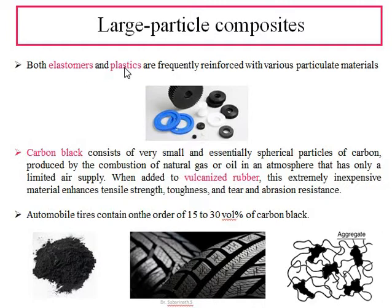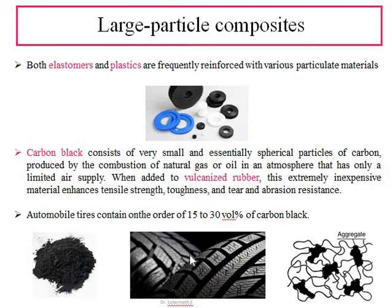Elastomers and plastics are also examples made from large particle composites. Carbon black, consisting of very small essentially spherical particles of carbon produced by combustion of natural gas or oil in limited air supply, is added to vulcanized rubber. This enhances tensile strength, toughness, and tear and abrasion resistance. Automobile tires are composites of vulcanized rubber with carbon black, sometimes using styrene butadiene rubber.